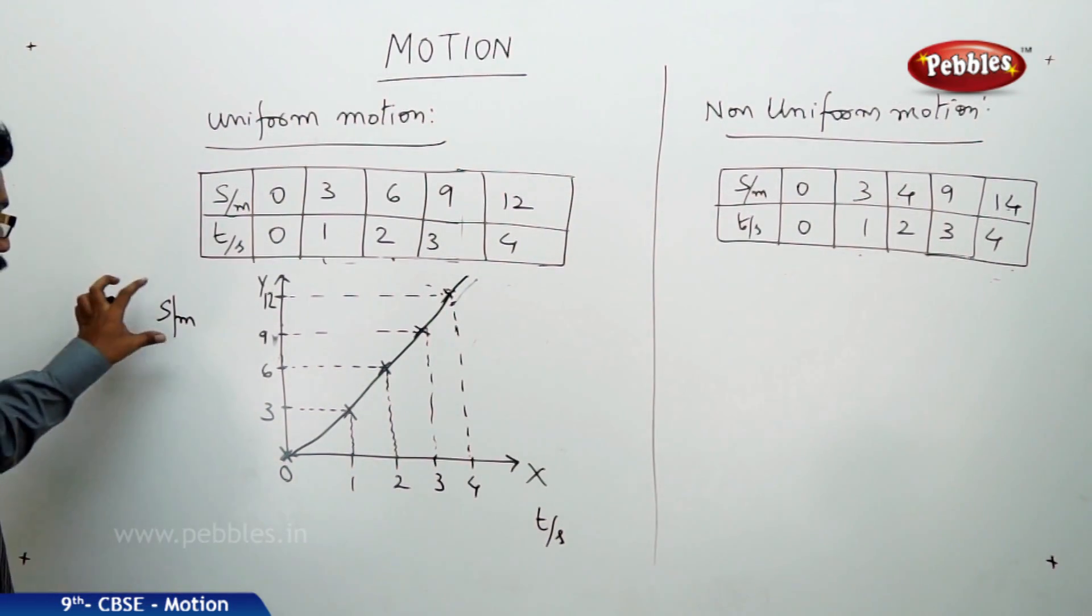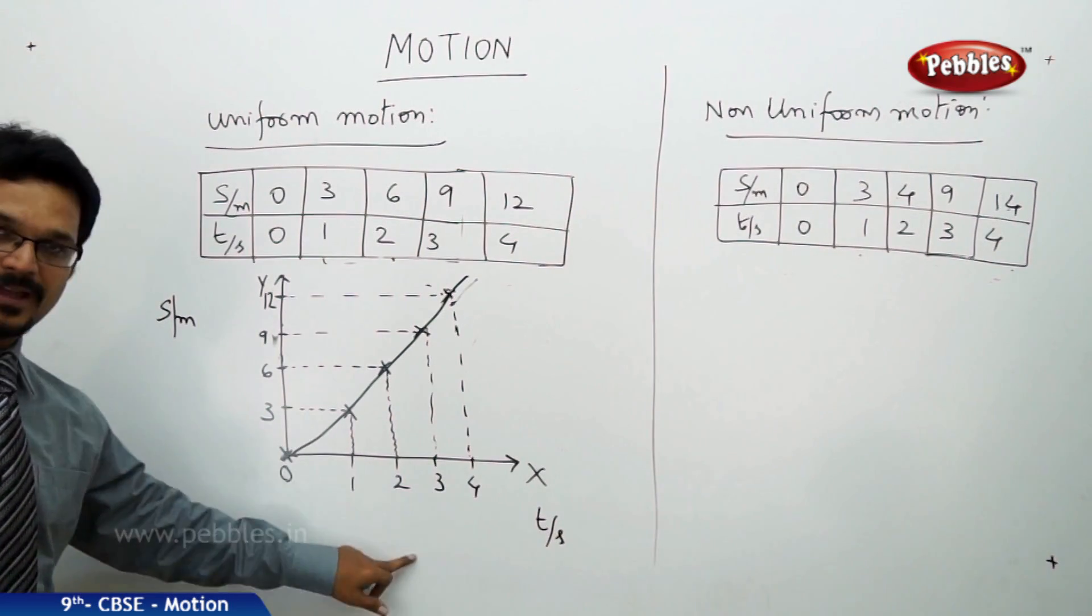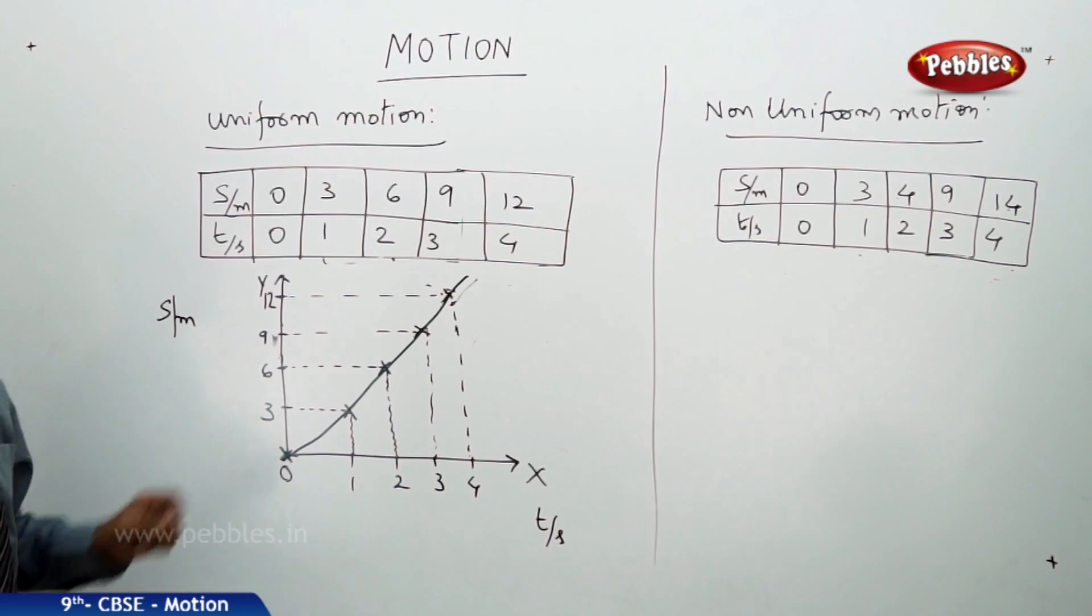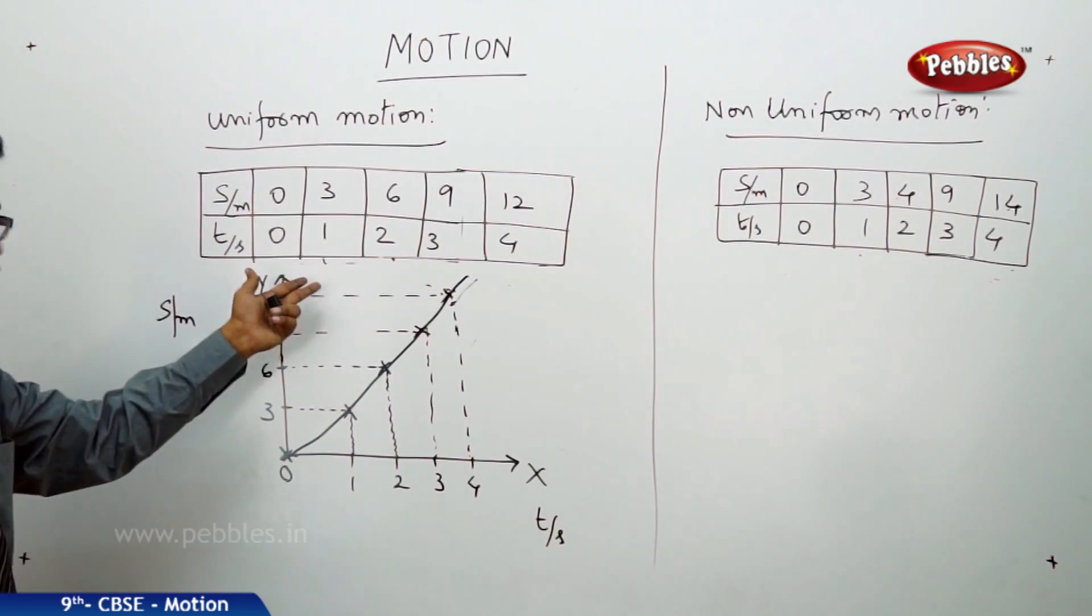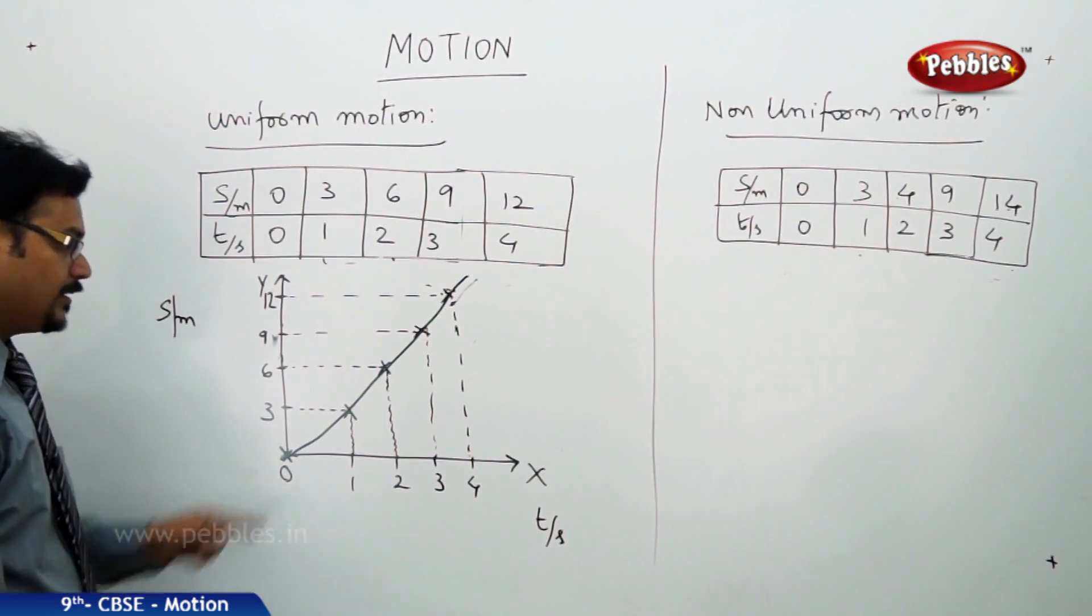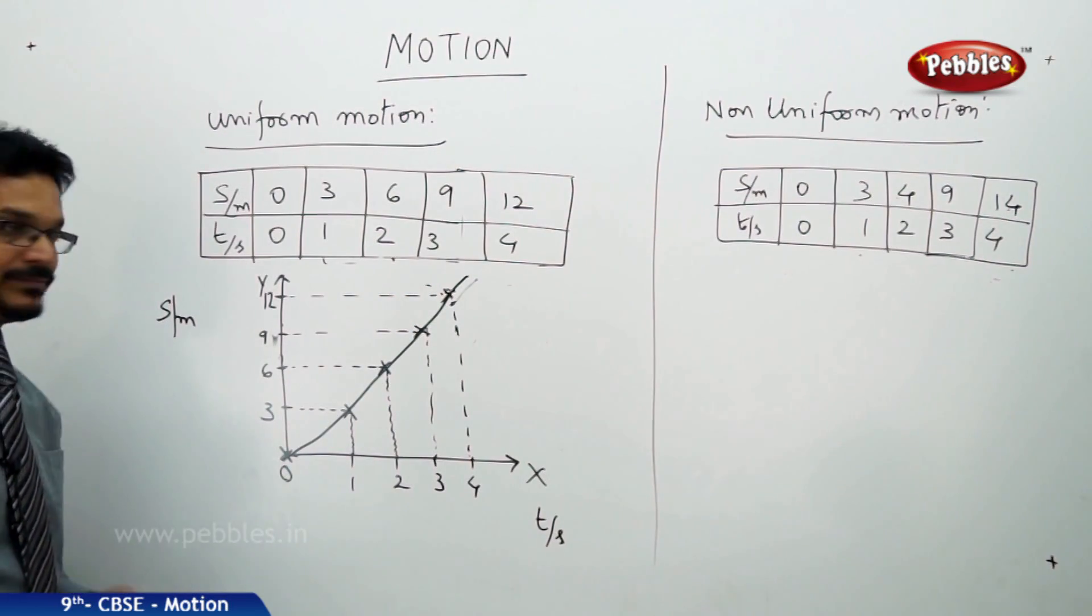So, whenever you see the distance time graph as a straight line, without any doubt, you can say it is uniform motion. It is uniform motion and speed is okay. Earlier, we have calculated 3 meters per second. So, this type of graph represents uniform motion. The line, straight line passing through origin.